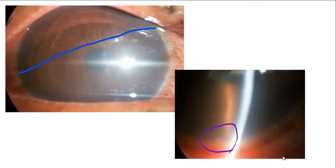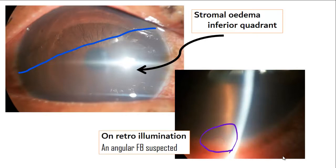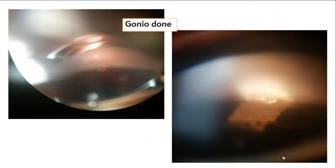Clinically, an inferior corneal edema involving the stroma was notable, and there was a small foreign body projecting at the inferior angle on retroillumination. A gonioscopy was done and a foreign body was detected in the angle.